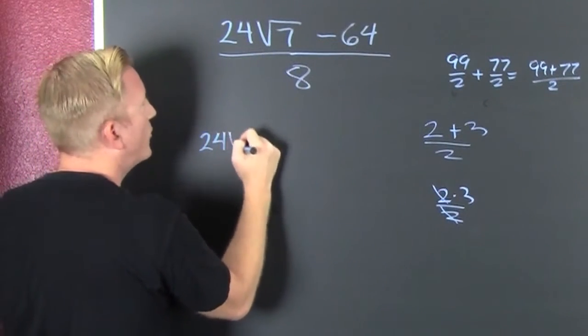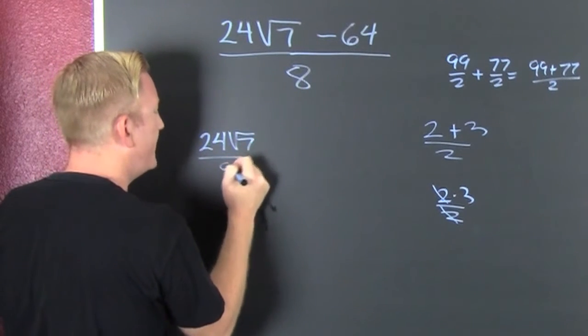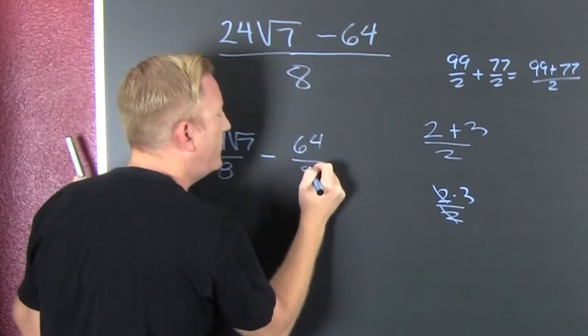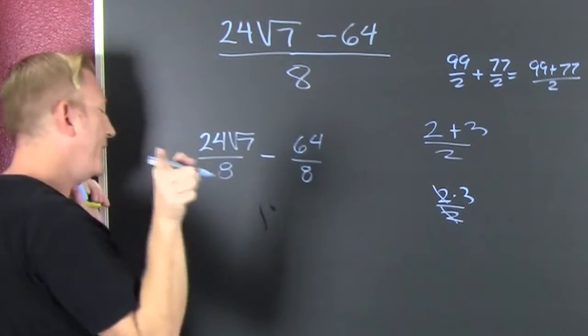So now I have a 24 root 7 all over that common denominator of 8. That's a 64 over 8. Great. Alright. Now I can reduce.